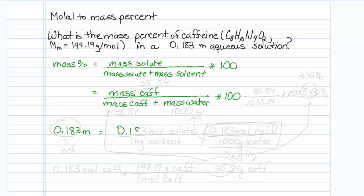it's telling us that we have 0.183 moles of solute over 1 kilogram solute. Well, that's really 0.183 moles of caffeine, that's our solute, over 1,000 grams of water.